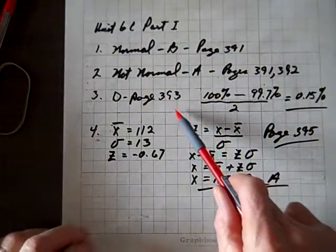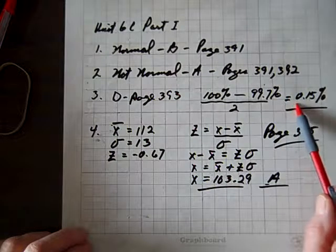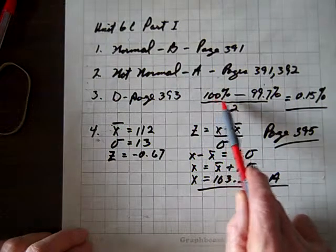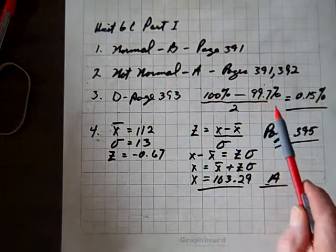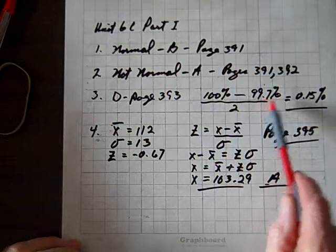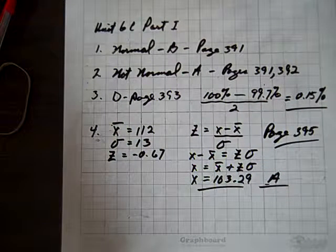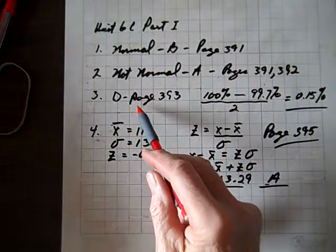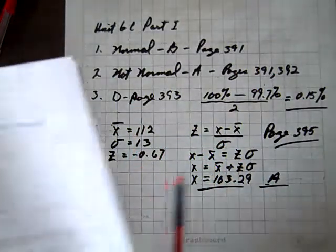And it turns out that that's our answer. So 100% minus 99.7% divided by 2, and that's our 0.15%. And that's D, selection D.